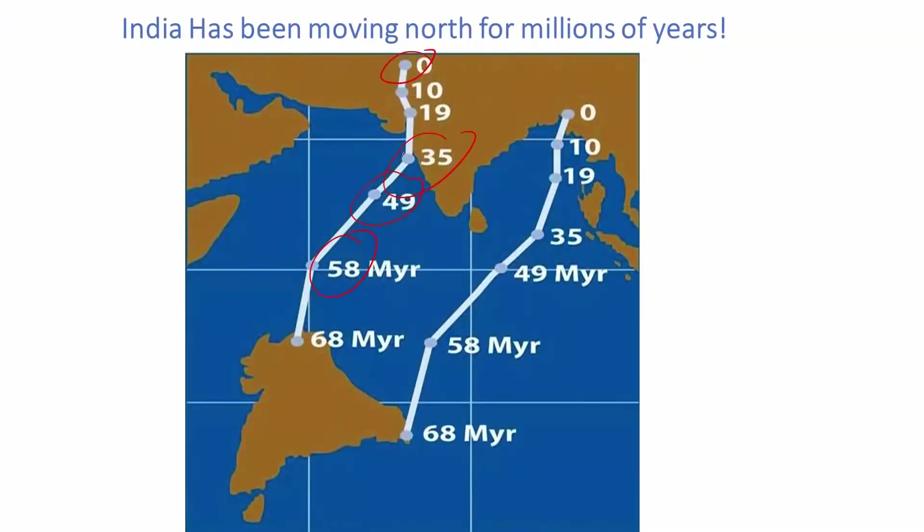As the continental drift happened and India crashed into Asia that existed at the time, it only partially subducted and started pushing up the Asian continent, creating the huge Himalayan mountains that we see now.